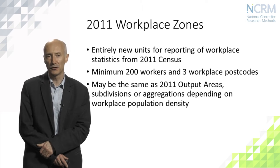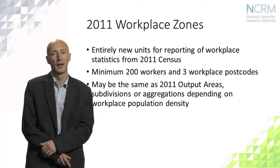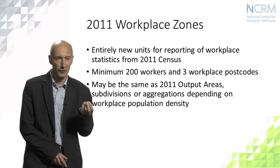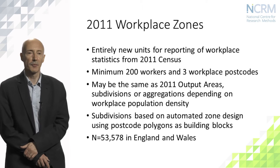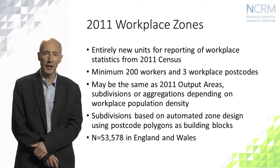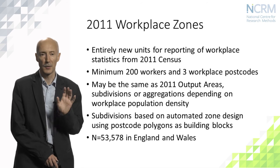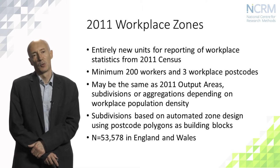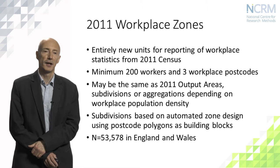In city centres and business districts where many people are working, workplace zones are subdivisions of the output areas. So we're adjusting the trade-off between the number of statistical units — in this case workers — and the size of the zones. Where subdivision has been needed, it's based on the same automated zone design process using synthetic postcode polygons — specifically the postcodes described as workplaces in the census. The workplace zone geography is a slightly larger set of zones than the output areas, with around 53,000 in England and Wales.